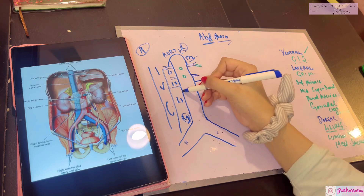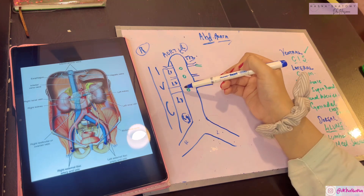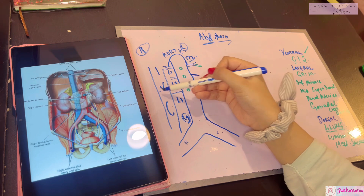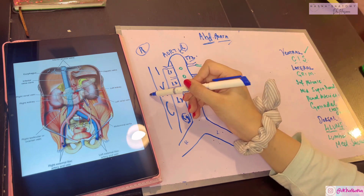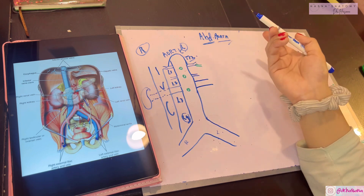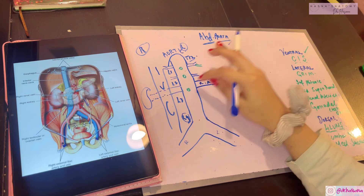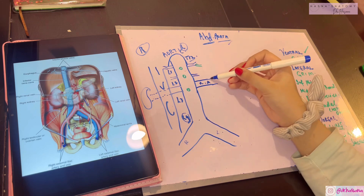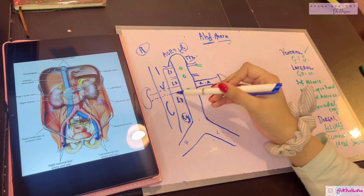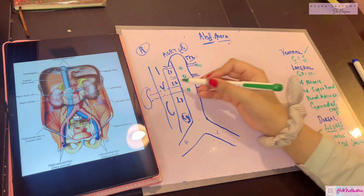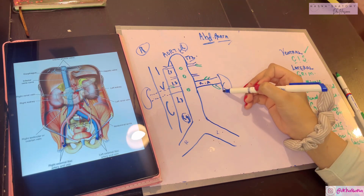The renal arteries are relatively larger than other branches. Their relations are important. The right renal artery passes behind the inferior vena cava, then goes to the hilum of the right kidney. The left renal artery runs behind the left renal vein and the splenic vein, then goes to the left kidney. The renal arteries also give off the inferior suprarenal arteries and ureteral arteries, which supply the ureter.